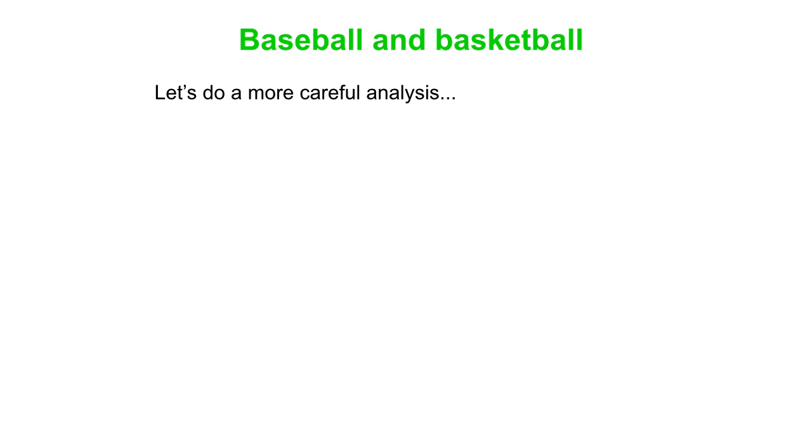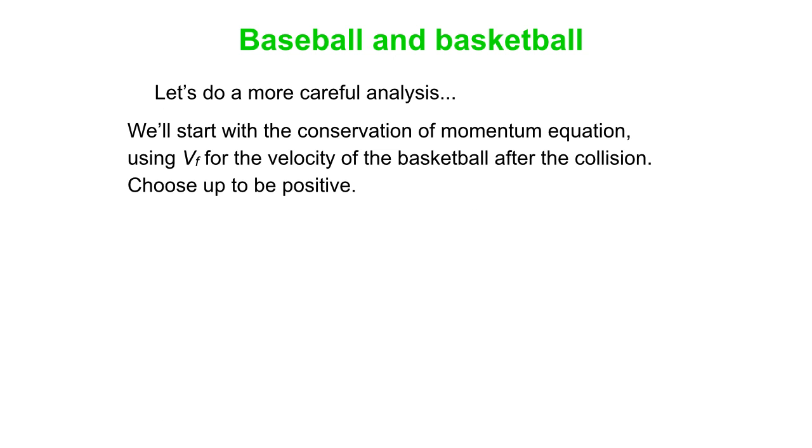We can do this a little more carefully. We'll start with our momentum conservation. Up is positive, so we've got 3mv for the basketball beforehand minus mv for the baseball. Afterwards, we've got some unknown velocity of the basketball, big Vf, and then little vf for the baseball, and so that simplifies to that. We'll call that equation 1.